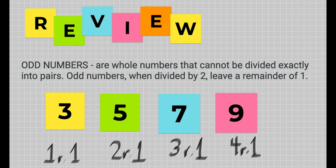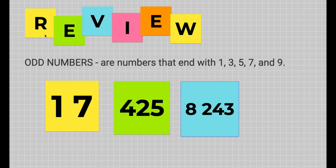But how about 1 — is 1 an odd number? Yes, 1 is also an odd number because you cannot divide this number exactly into pairs. We can also say that odd numbers are numbers that end with 1, 3, 5, 7, and 9.